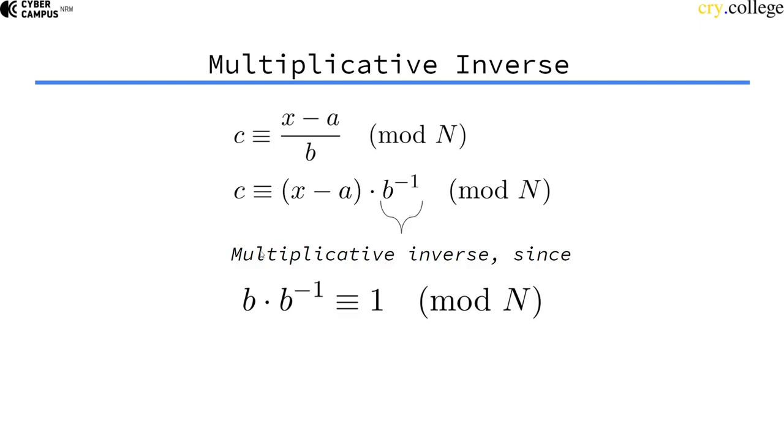And then we say, okay, b to the power of minus 1 is the multiplicative inverse of b, since b times its inverse. You could also write this as b divided by b, is the neutral element of multiplication, which is 1. Because if you multiply 1 by something, nothing changes.